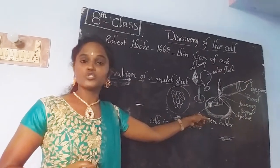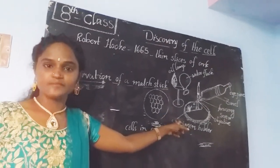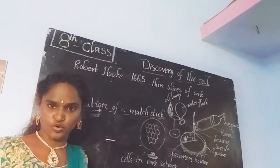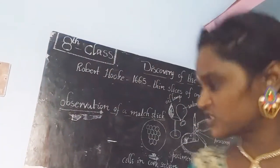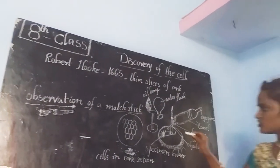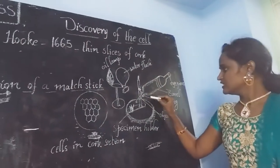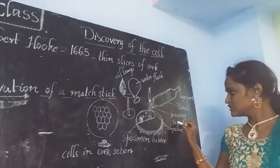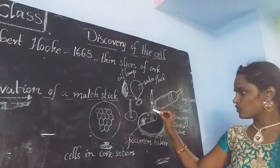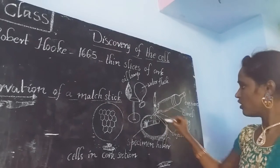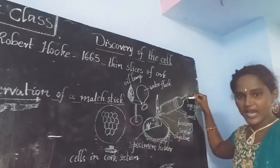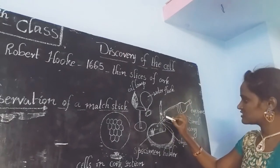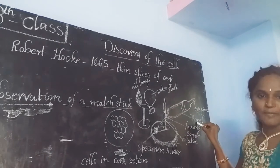Here I draw the microscope which was prepared by Robert Hooke. He prepared a handmade microscope using different materials. This part is the focusing screw, this one is called the objective, this part is called the eyepiece.